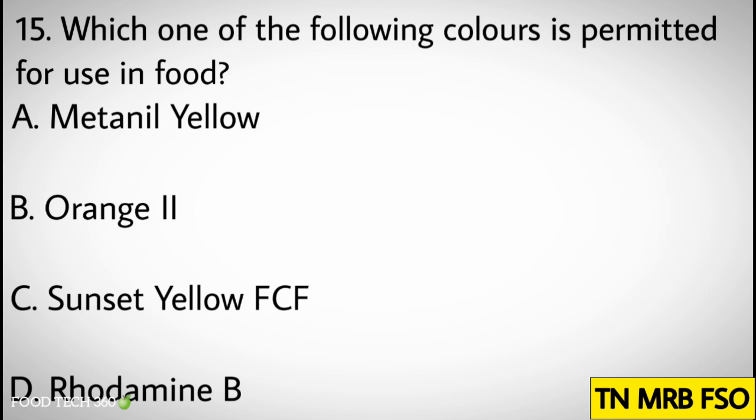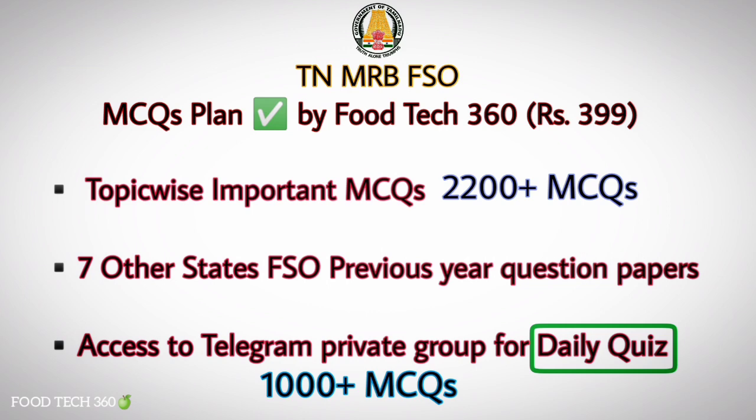Question number fifteen: Which of the following colors is permitted for use in food? Options: A) Nataline Yellow, B) Orange 2, C) Sunset Yellow FCF, D) Rhodamine B. Correct answer: C) Sunset Yellow FCF.